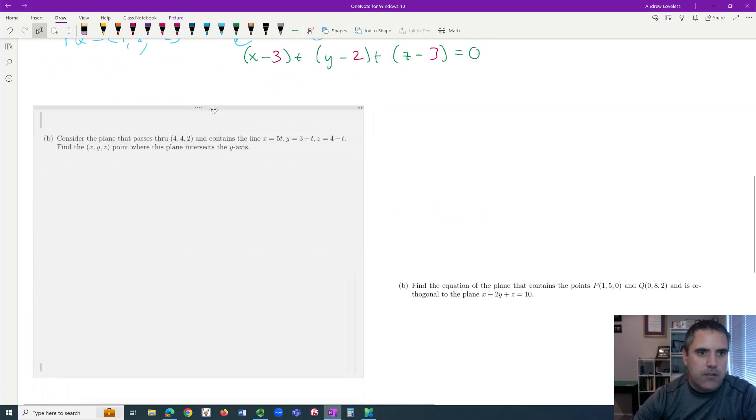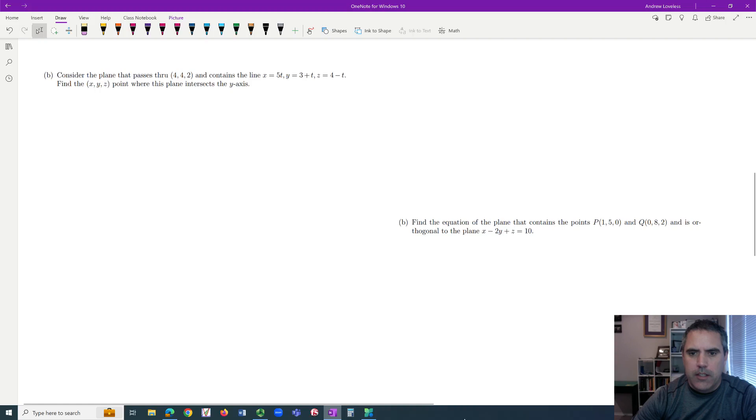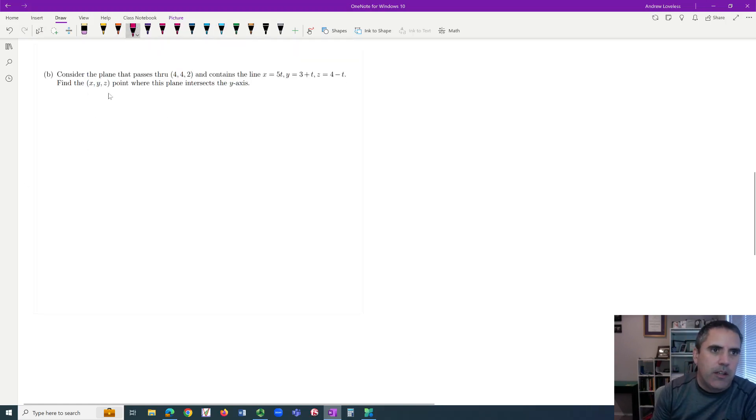Here's another one. And again, I just randomly grabbed ones from my old exams or other instructors old exams. Consider the plane that passes through this point. I'm trying to find a plane. I need a point and a normal. That's what I want. What am I giving? It passes through the point four, four, two. I'm too excited. I did not write this down yet. Four, four, two. And now I need a normal.